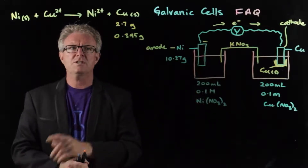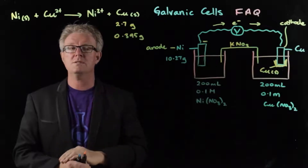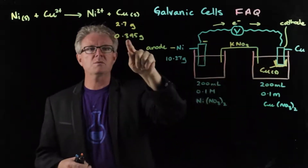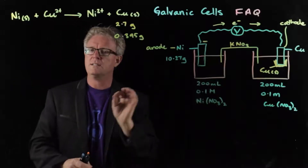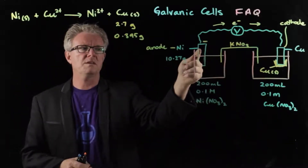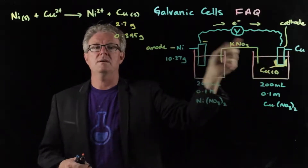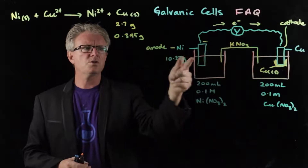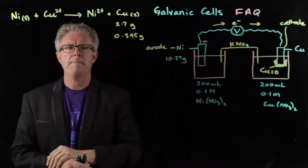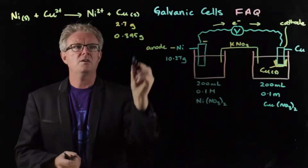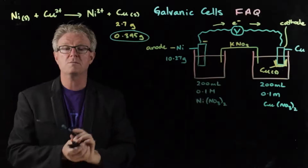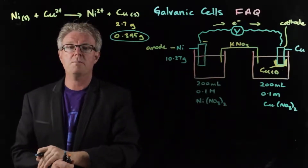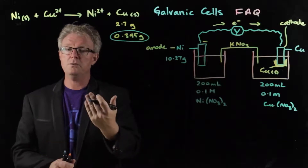Just to clarify: I said the mass plated out was 2.7 grams, but what I should have said was the mass of the copper electrode was 2.7 grams. When we recorded the mass of the deposit, it was 0.395 grams. So: 10.27 grams is the mass of the nickel electrode, 2.7 grams was the mass of the copper electrode, and 0.395 grams is what was plated out. To work out the final mass of the nickel electrode, we use the mass of copper deposited to find the moles of copper, then use the molar ratio to find moles of nickel lost.